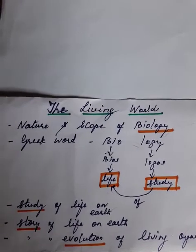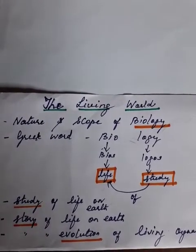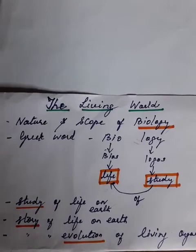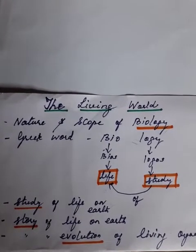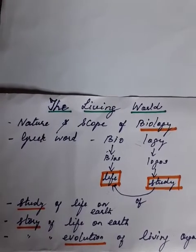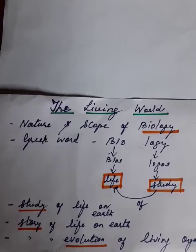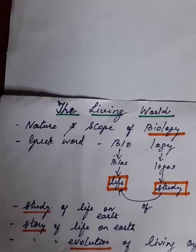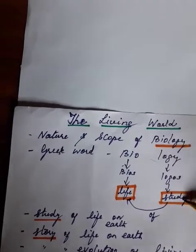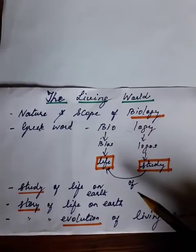Hello students. The first chapter in 11th biology is the Living World. Before going into detail, as a biology student you should know what is the nature and scope of biology. Biology is a Greek word — if you separate it: bio means bios, logi means logos. Bios means life, logos means study. So biology means study of life.